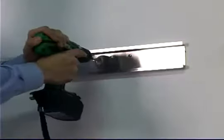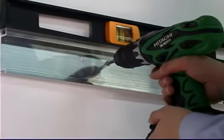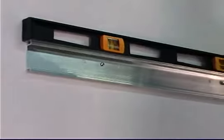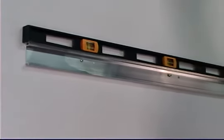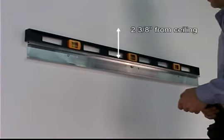Secure the wall mount bracket to the wall at the desired height and make sure it is level. The bracket should be fastened to wall studs or some reinforcement within the wall. You will need at least 2 and 3 eighths inches between the ceiling and the top of the wall mount bracket in order to position the case onto the bracket.